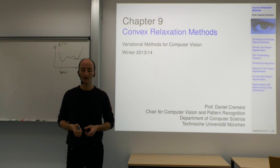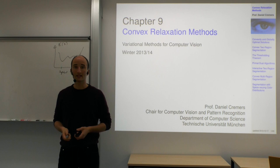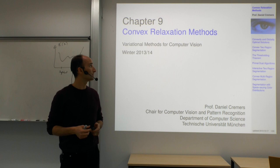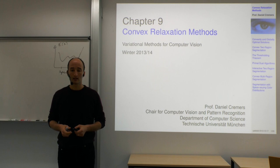Variational methods became popular in the 1980s with the snakes, with the Mumford-Shah, and also optical flow algorithms that we'll talk about later in class. A lot of these energies — most of them proposed in the 1980s — are non-convex energies, and the challenge is to find good solutions.